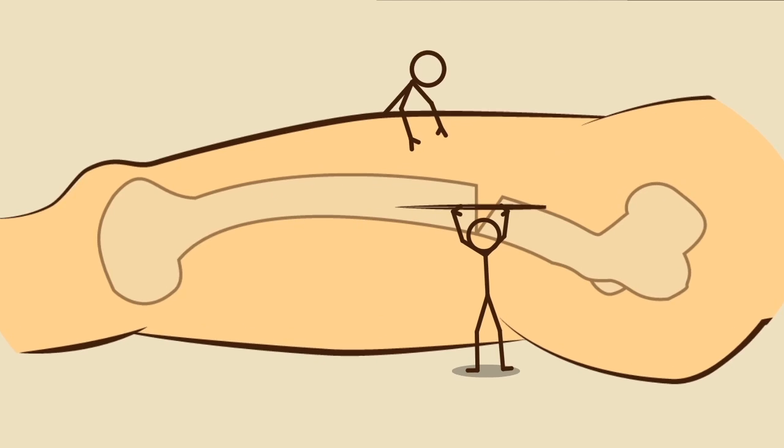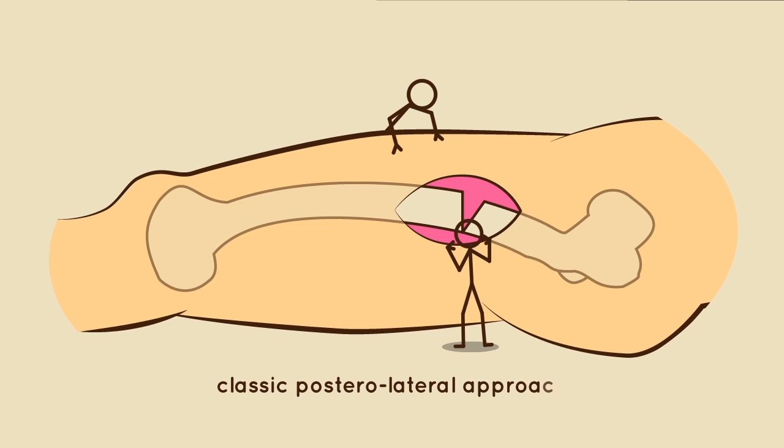Open osteotomy technique. Through a classic posterolateral approach, the femur is exposed subperiosteally. Subsequently, the first osteotomy is executed under C-arm guidance.